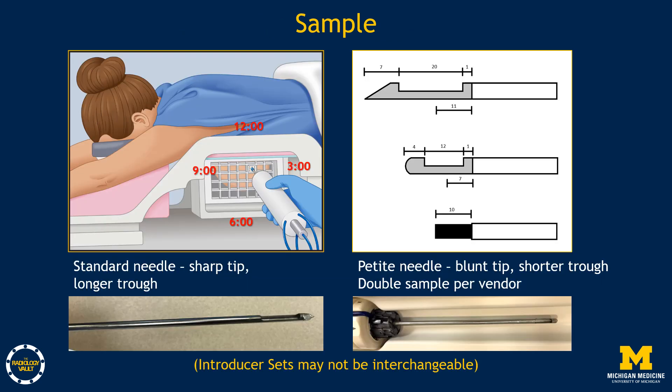Return to the patient, remove the plastic obturator, and insert the biopsy device. Take samples as you go around the clock. In this case, we plan to take extra samples towards the foot, which translates to 3 o'clock. The biopsy device is vacuum-assisted and may come in a standard and petite size. The standard needle has a longer trough and sharp tip. The petite needle has a shorter trough and may have a blunt tip. Some vendors recommend taking twice the number of samples if using a petite needle as you would for a standard needle. They may use their own introducer sets that may not be interchangeable.